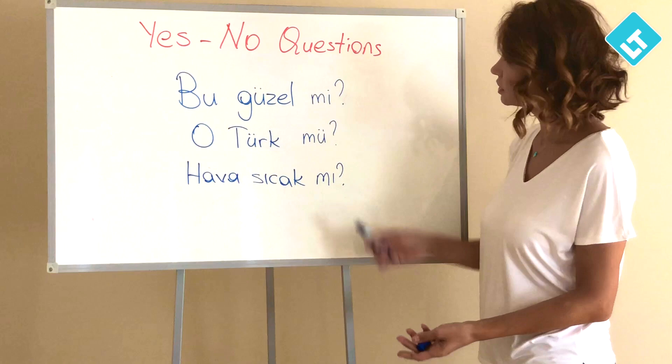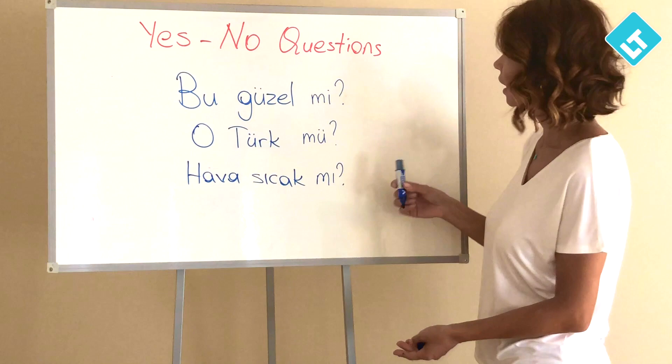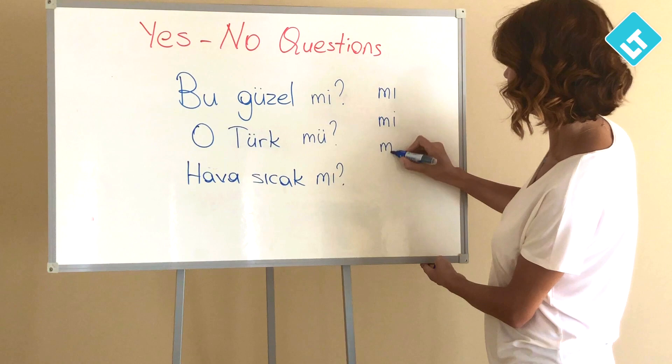As you can see, I use different forms of the particle mi — mü and mı — because this particle has four different forms: mı, mi, mu, and mü.